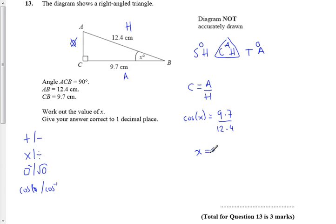So, to get X on its own, all I've got to do is do the inverse function, cos minus 1, 9.7 divided by 12.4. Now, I can do that in my calculator.